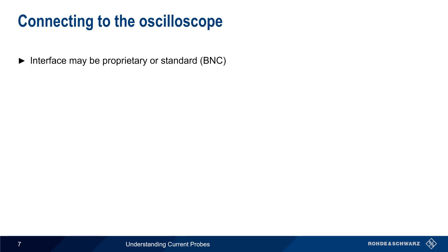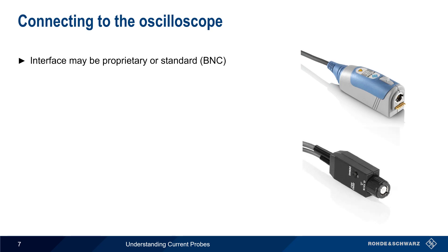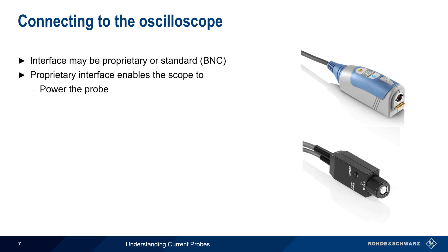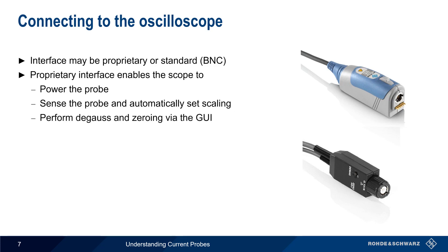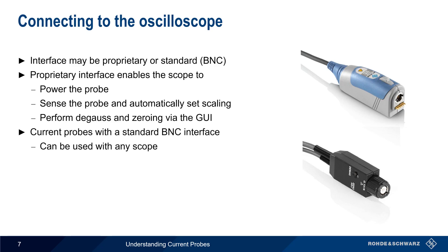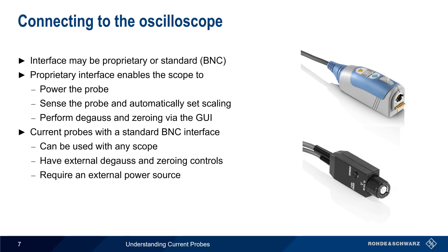Current probes may attach to the scope through a proprietary interface or using a standard BNC connector. The advantages of using a proprietary interface are that it enables the scope to provide power to the probe, and that it also enables the scope to sense the probe type, allowing it to automatically set the proper scaling factor. Degaussing and zeroing can also be performed via the scope's interface. On the other hand, current probes with a standard BNC interface can be used with any oscilloscope. They have external physical controls for degauss and zeroing, but require an external power source — this can be a USB connection, an internal battery, or a proprietary external supply.